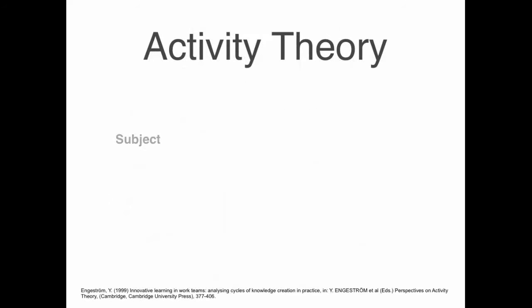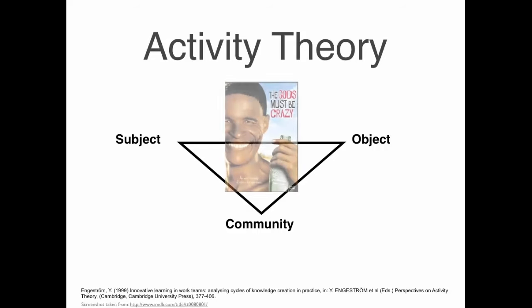Hence, Activity Theory starts with the subject who interacts with the object, and both the subject and the object have a relationship to a community. The community defines how the objects are used and the functions of individuals. This phenomenon is well illustrated in a 1980s comedy movie titled The Gods Must Be Crazy, or in French, Les Dieux sont tombés sur la tête.